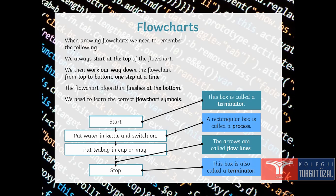Remember, start is called terminator here. This button. We can see it as oval too. A rectangular box is called the process. The arrows are called flow lines. And this top terminator here is the end of our flow charts.